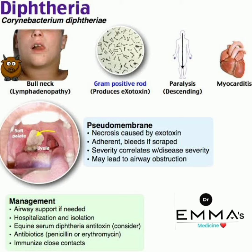Looking at the image on the left side, the pseudomembrane is visible on the soft palate and uvula. The pseudomembrane involves necrosis caused by exotoxin; it is adherent, bleeds on scraping, its severity correlates with disease severity, and it may lead to airway obstruction.